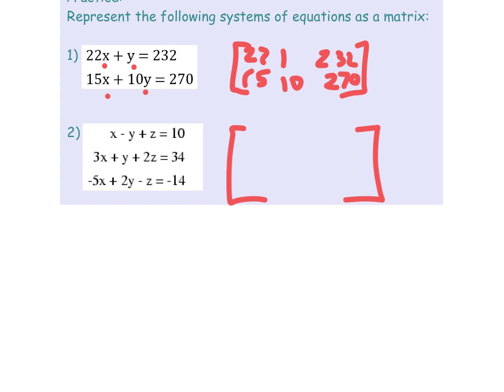So see if you can make the matrix for that. I'll pause while you give that a shot. Okay, we're back. This would have been a one for that, that would be a negative one and a one, and then a 10. And then it's three, one, two, 34. And then it's a negative five, two, negative one for that, and a negative 14.